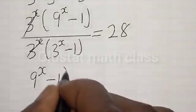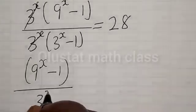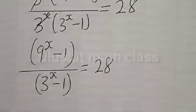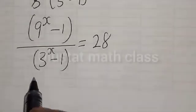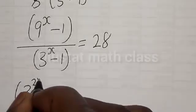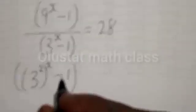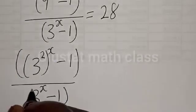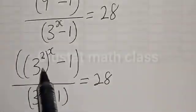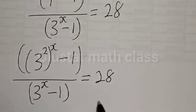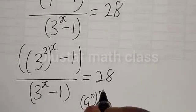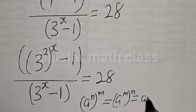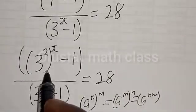Divided by the denominator, where 3 raised to power s is common: 3 raised to power s into 3 raised to power s minus 1, is equal to 28. Then this cancels, and we have 9 raised to power s minus 1 divided by 3 raised to power s minus 1 is equal to 28. Then 9 raised to power s is the same thing as 3 raised to power 2, so we have 3 raised to power 2 into s minus 1, divided by 3 raised to power s minus 1. Remember, if you have a raised to power n raised to power m, that is the same thing as a raised to power nm.